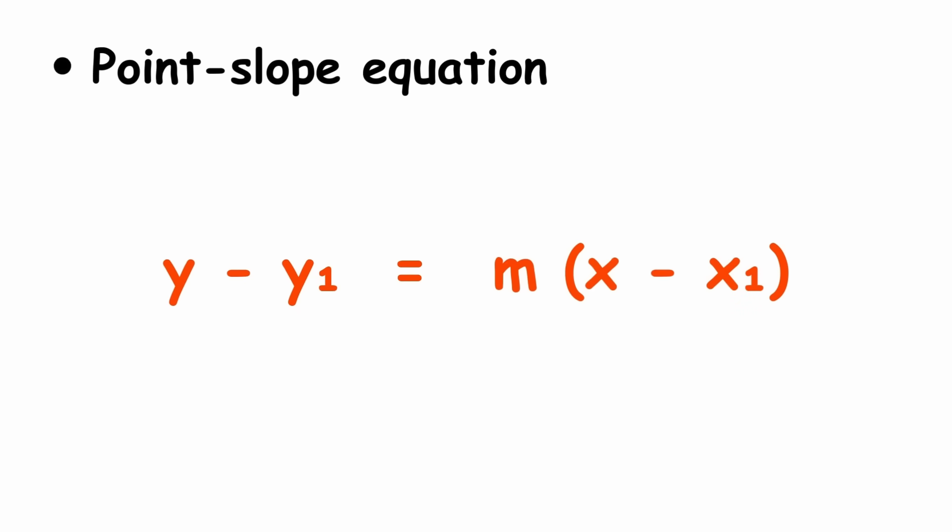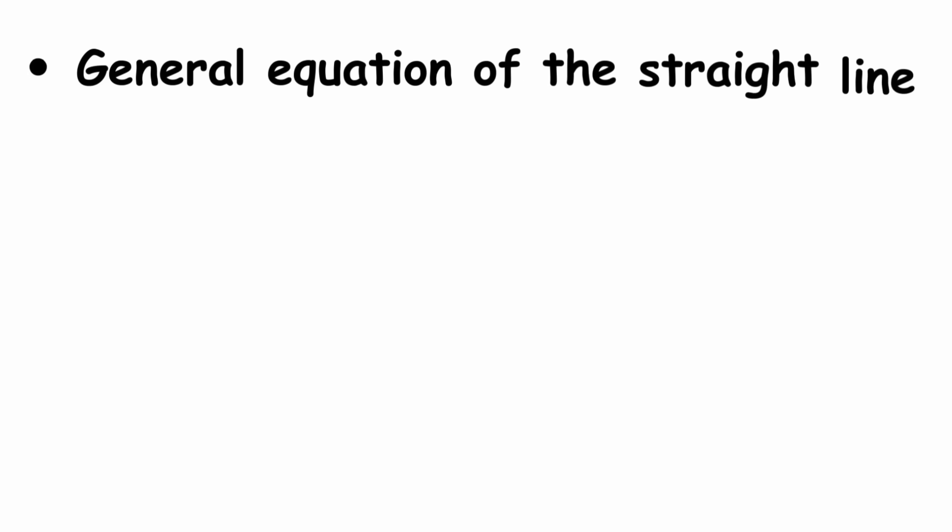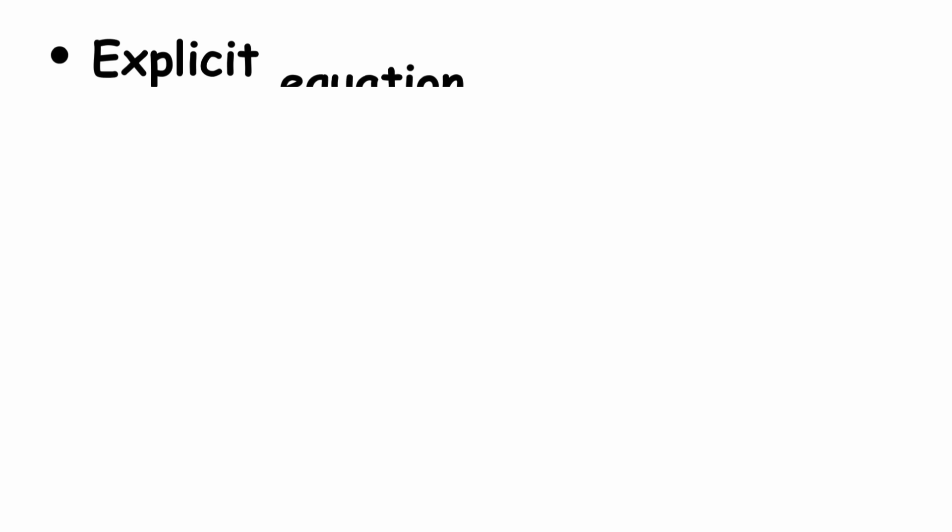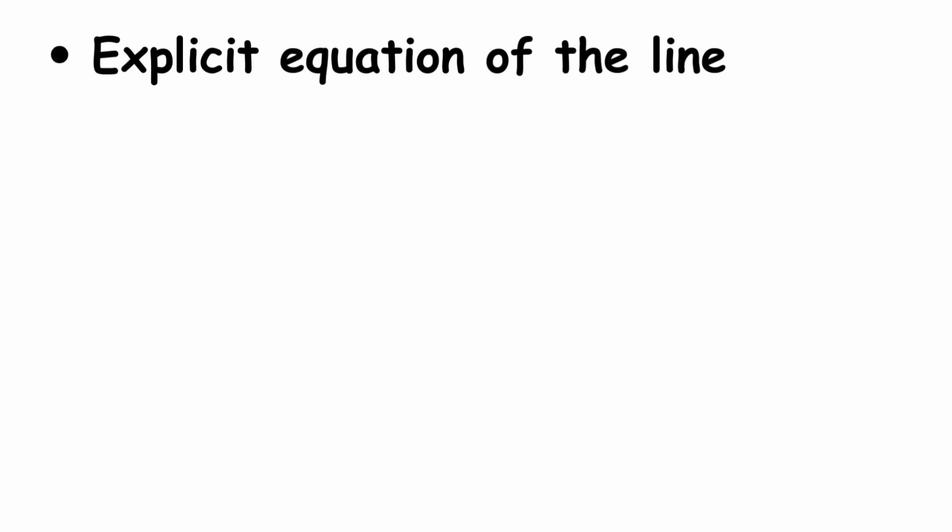These are known as point-slope equation y minus y1 equals m times (x minus x1), general equation of the straight line ax plus by plus c equals 0, explicit equation of the line y equals mx plus b, segmental equation x over a plus y over b equals 1, parametric equation x equals x0 plus at, y equals y0 plus bt.